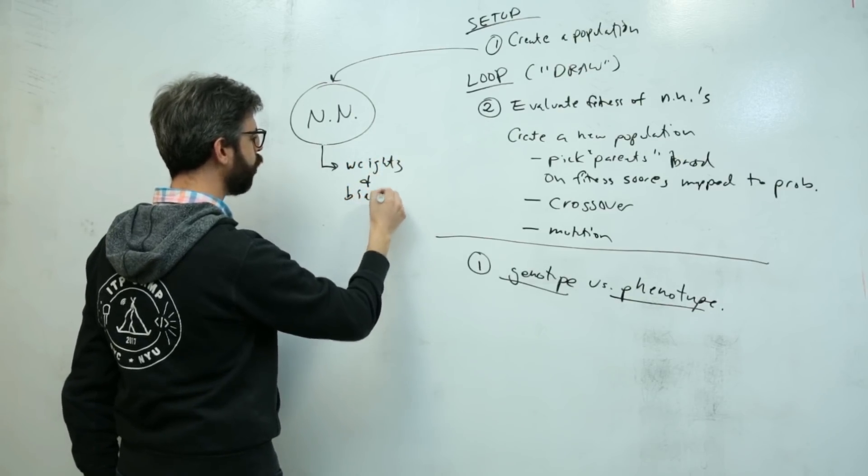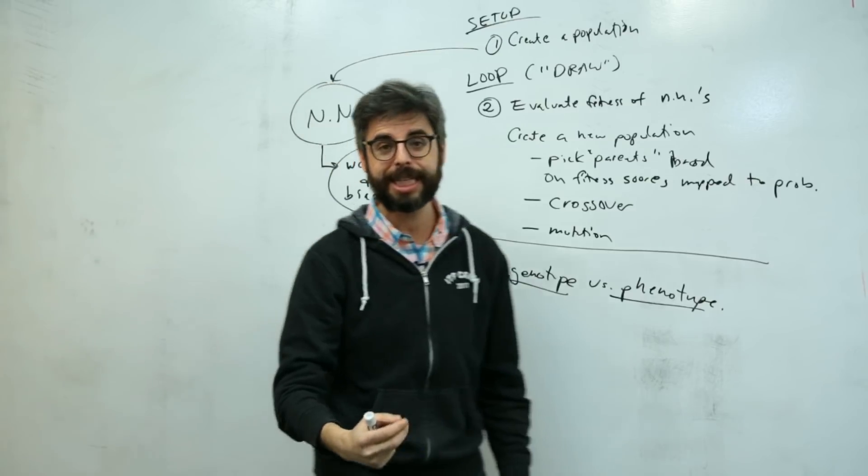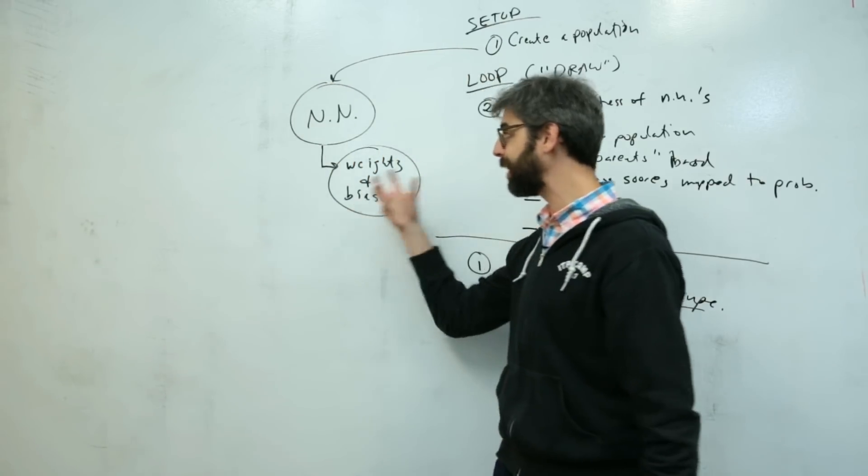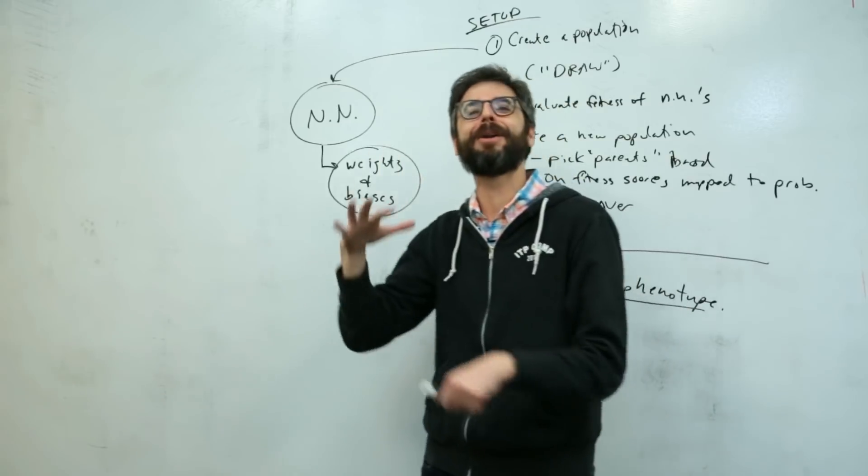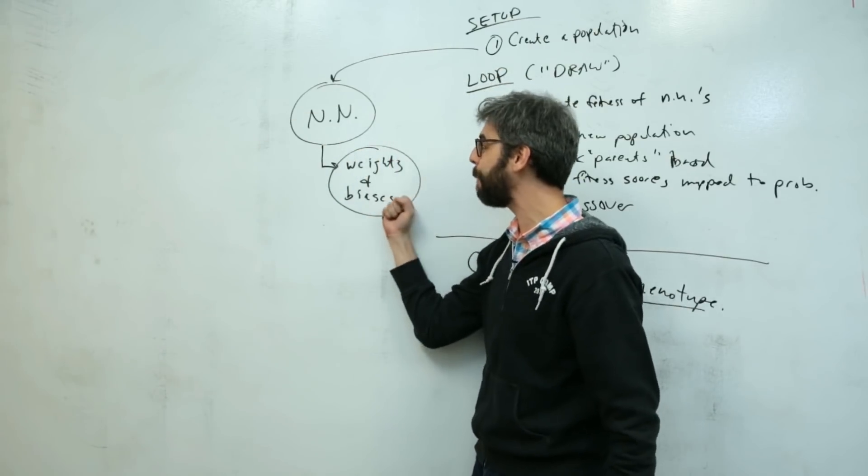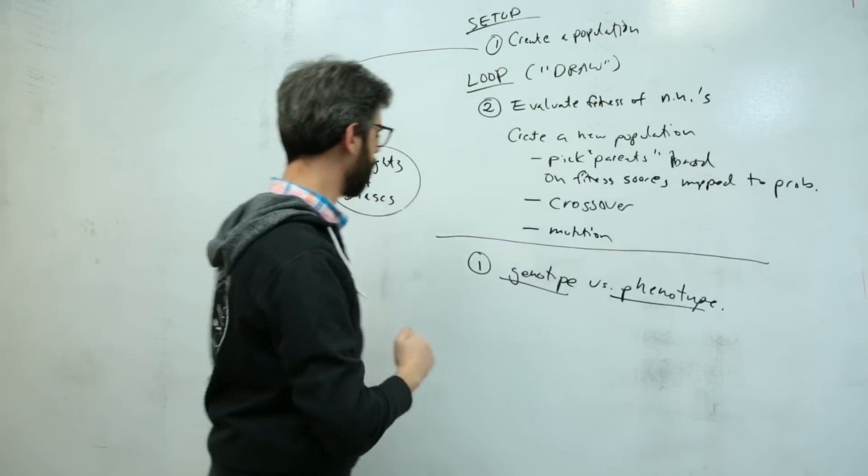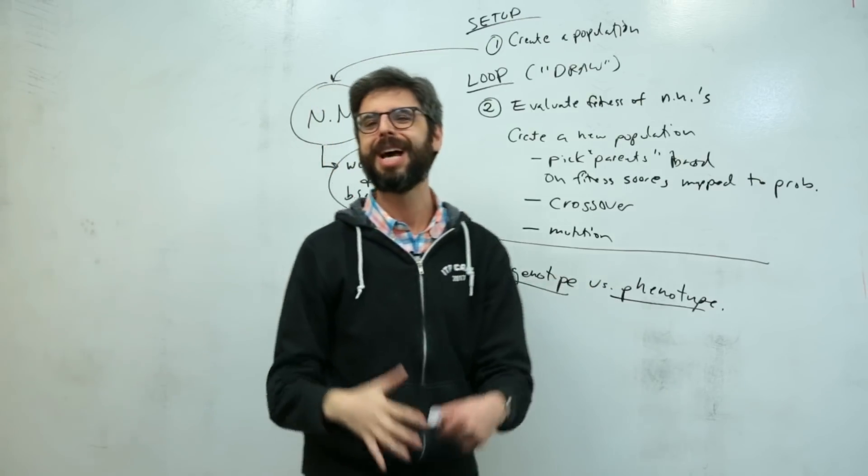The core elements of those layers are weights and biases. All the weight matrices and the bias vectors—which I describe in detail in my neural network tutorials—make up the genotype of the neural network.